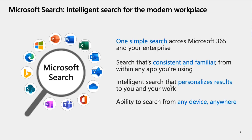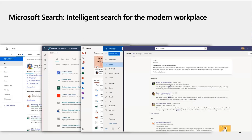on your left-hand side you can see there's a gamut of products like Bing, Office.com, SharePoint, Outlook, Teams, and so many more. The idea is how do we have one simple search across all of these Microsoft 365 products and for the enterprise. Microsoft Search gives you search that's consistent and familiar from within any app you're using, intelligent search that personalizes results to you and your work, and also gives the ability to search from any device anywhere. We have Microsoft Search powering the experience for all of these different Microsoft 365 products.